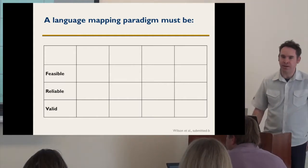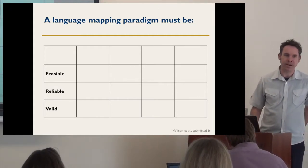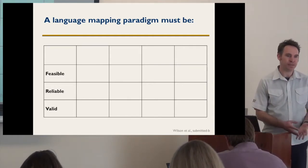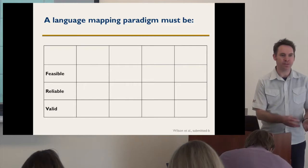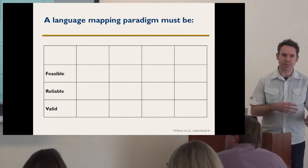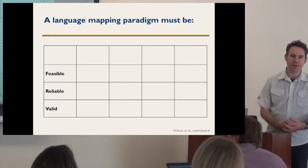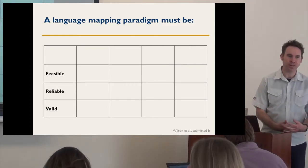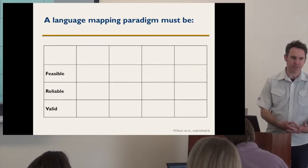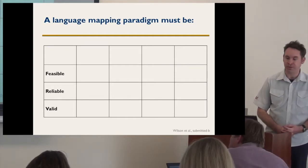To map language areas in people with aphasia is inherently problematic. Normally, to map language areas, you have people do a language task and compare it to some matched control task — by doing that comparison you reveal the language areas. The problem is, by definition, people with aphasia are not very good at language tasks. So it raises challenges in this population that don't exist in normal language mapping contexts.